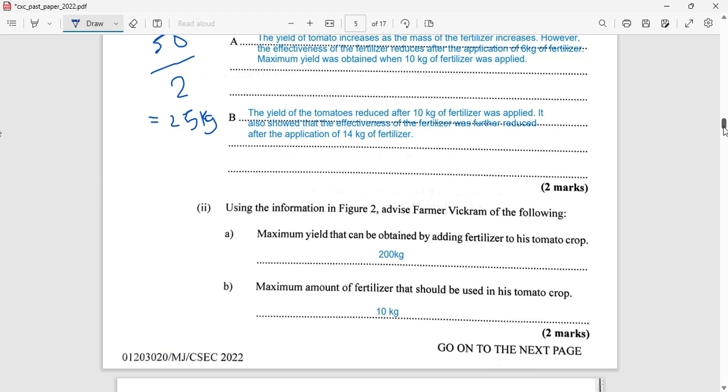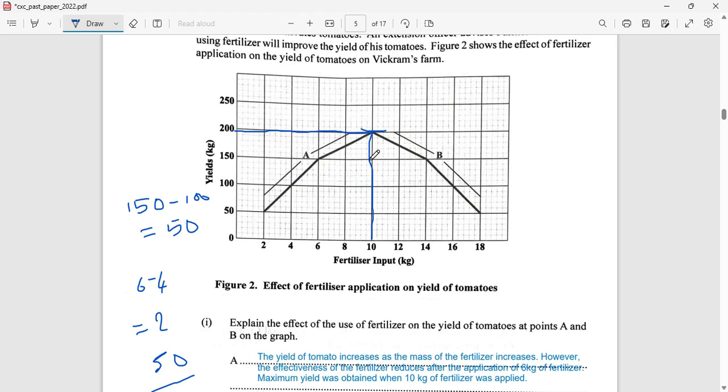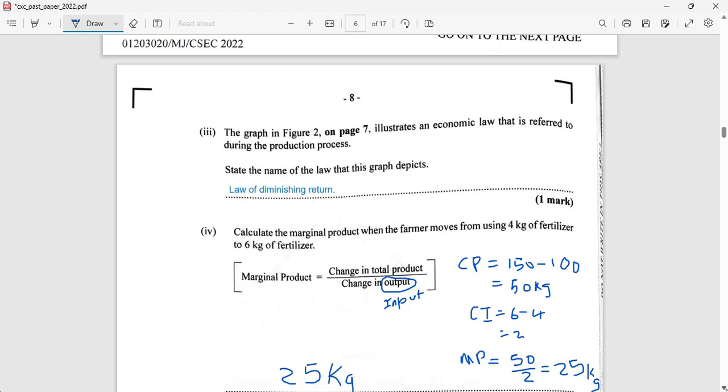Maximum amount of fertilizer that should be used in his tomato crops: wherever you find maximum or optimum yield, that is where you're going to be using your maximum amount of fertilizer. If you observe, after 10 kg of fertilizer there was no further increase in the amount of tomato produced. Instead, after 10 kilograms of fertilizer there was a decline in the number of tomatoes produced. So the maximum amount of fertilizer that will be beneficial to the farmer is 10 kg. The graph illustrates an economic law that is referred to during the production process. State the name of the law that this graph depicts: the Law of Diminishing Returns.